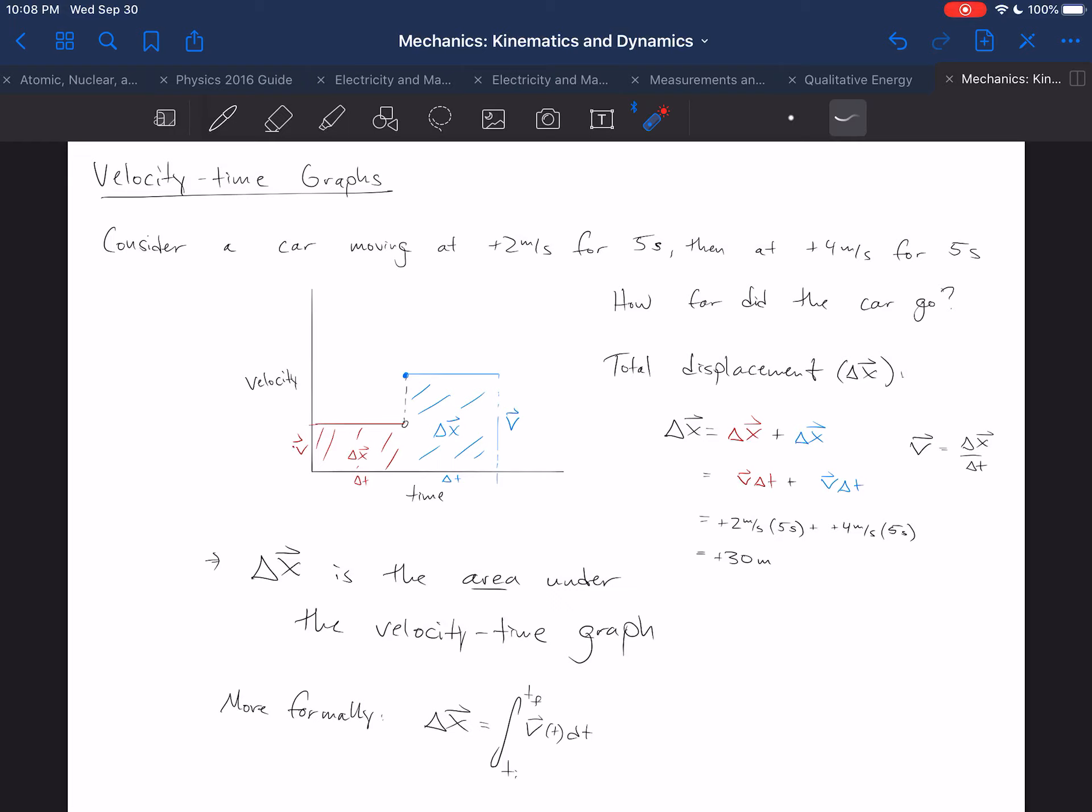And I can do the same in this blue section as well. The velocity times delta t is the total displacement during that time period. In particular, plus 10 meters in this example, and plus 20 meters in this example.